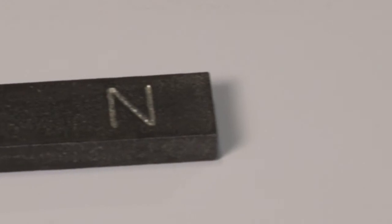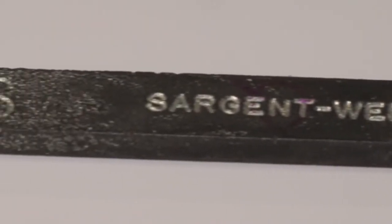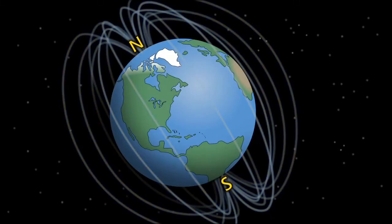Those N and S markings define the north and south poles of the magnet. The poles are where the magnetic field lines converge or come together. Just like our Earth, which has a north and a south pole, each and every magnet has at least two opposite poles.